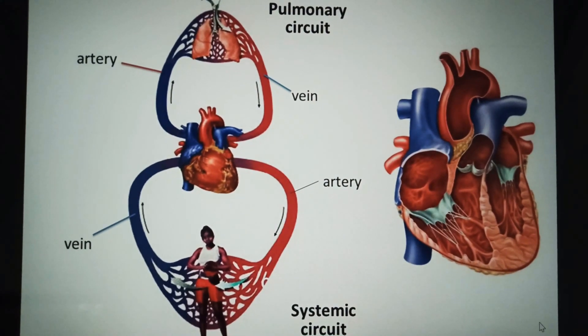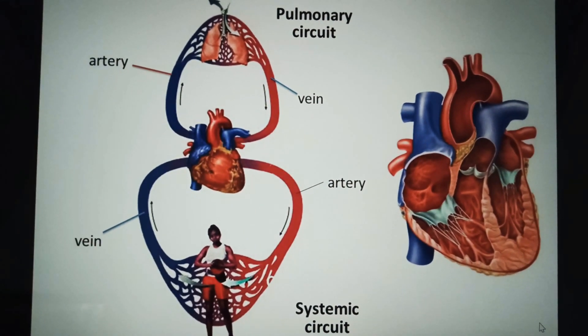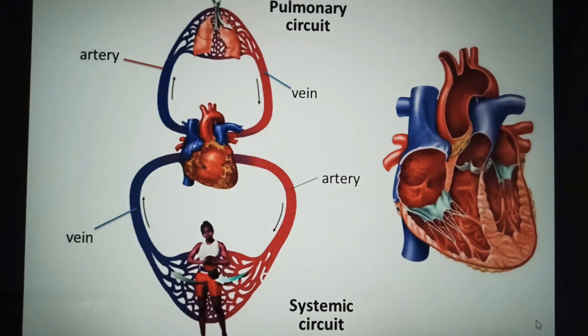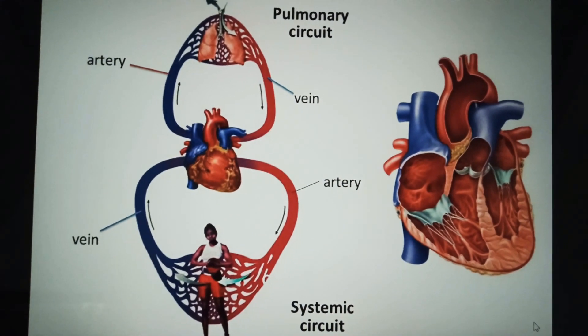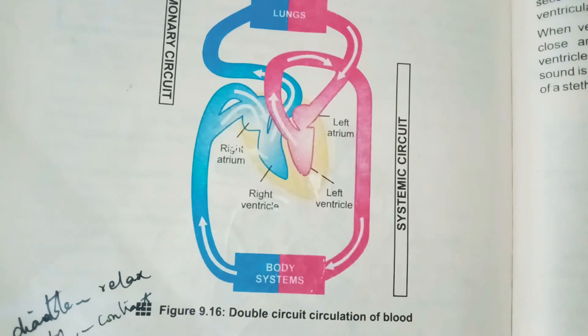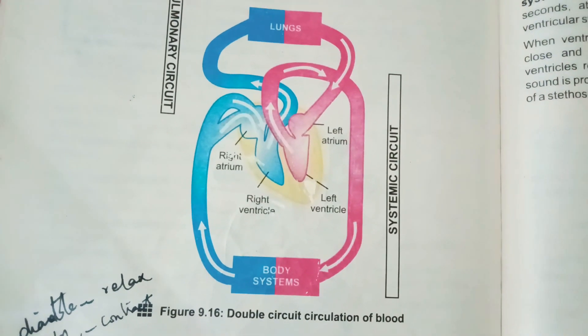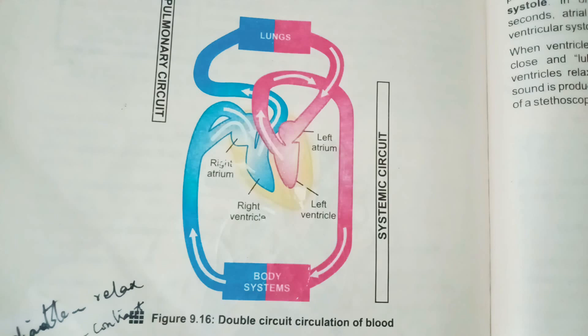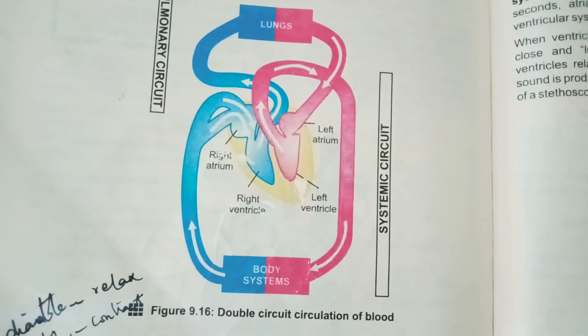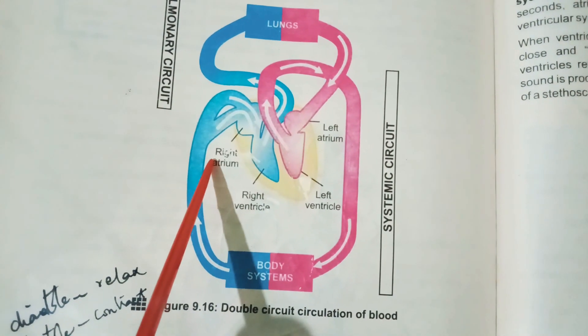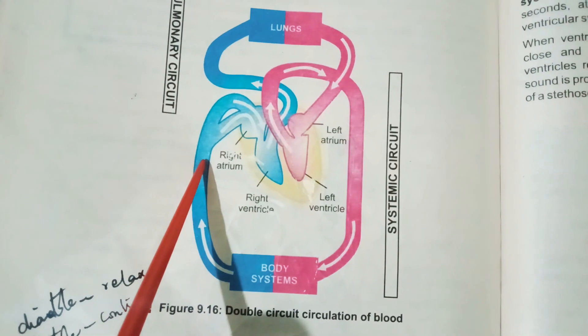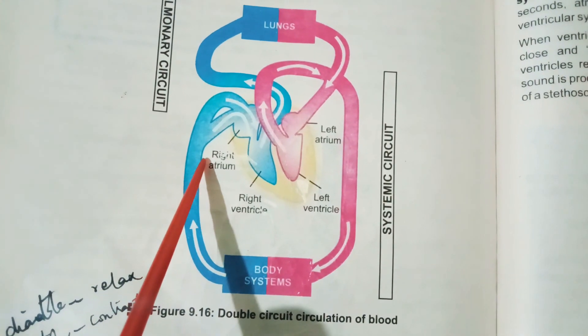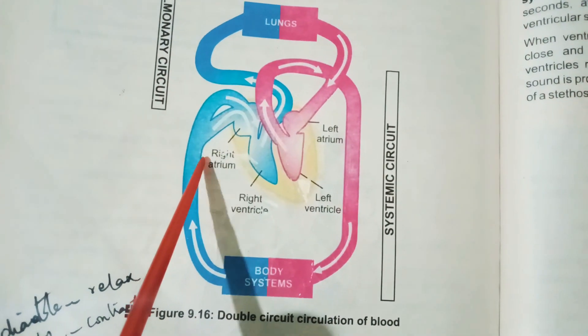Assalamu alaikum students. In this lesson I will describe pulmonary and systemic circulation. First, I will discuss double circuit circulation of blood. We know that the right side of heart collects the deoxygenated blood from the body.